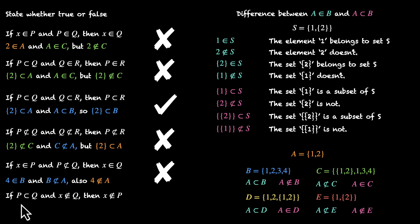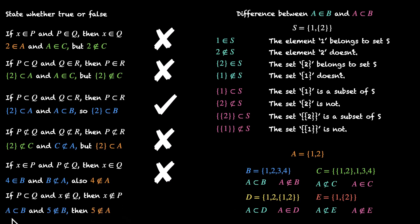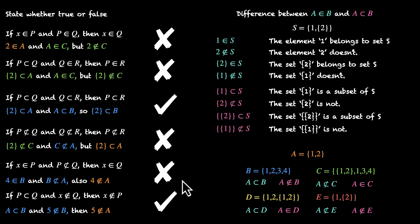Statement 6: if P is a subset of Q and X does not belong to Q, then X does not belong to P. This seems right. For example, A is a subset of B and 5 does not belong to B — 5 does not belong to any of these sets. Five does not belong to B and five also does not belong to A. So this statement is true. I hope you understood the difference between the belongs-to symbol and the subset symbol from these examples.